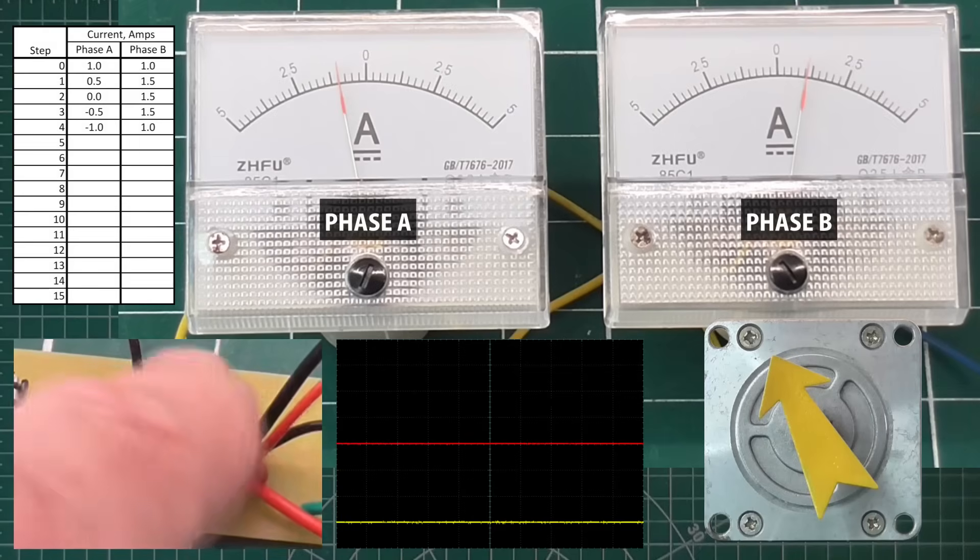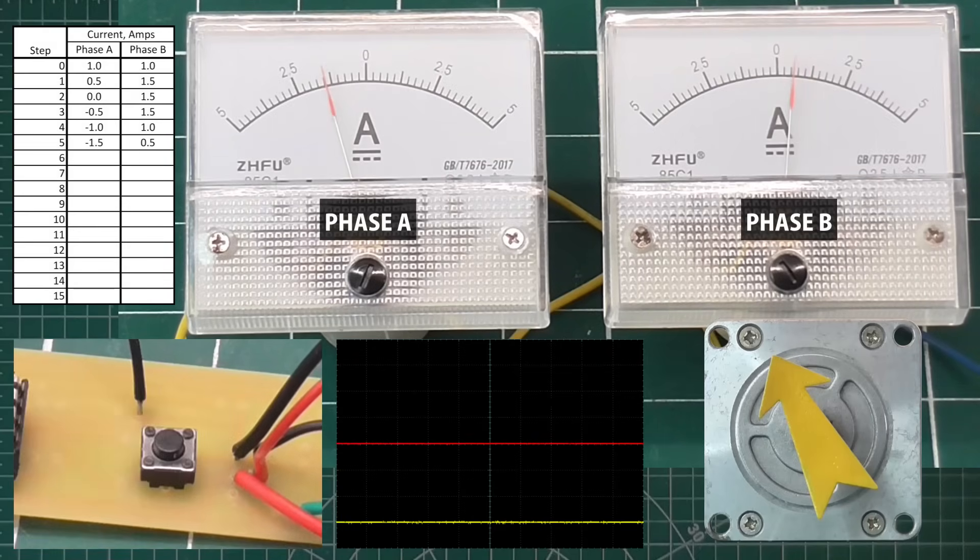Step 5. A goes down to minus 1.5. B goes down to 0.5. Now we're half way around the step cycle, and the current in both phases is minus 1 amp, the opposite of where we started.